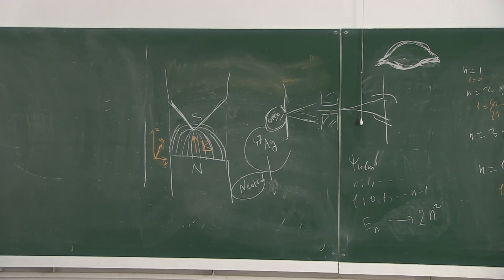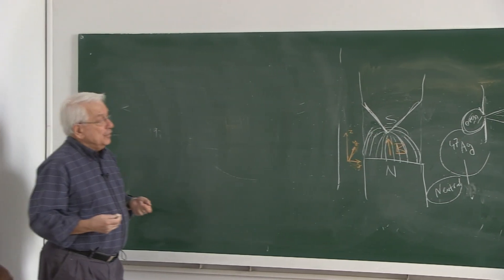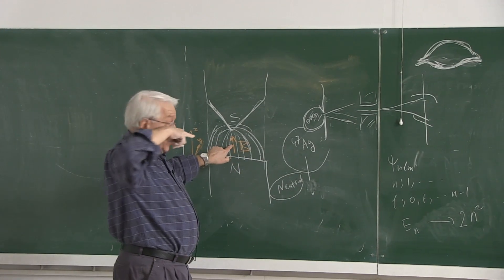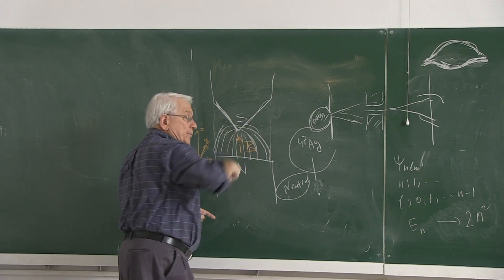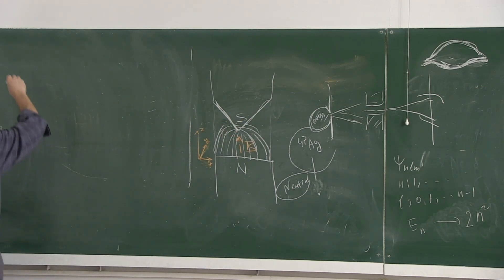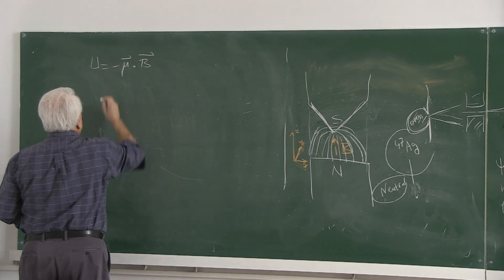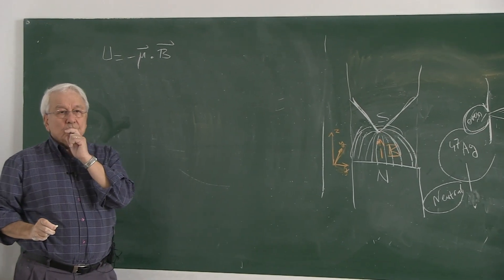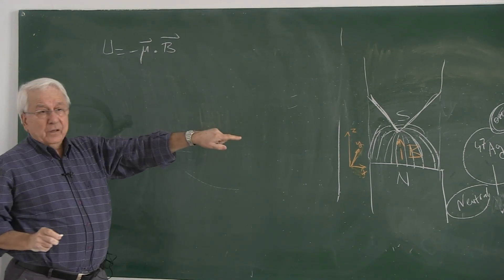What is the semi-classical argument? What is the energy, additional energy or interaction energy of the neutral silver atoms going through here? That picture is that or there. And there is an interaction energy minus mu dot B.